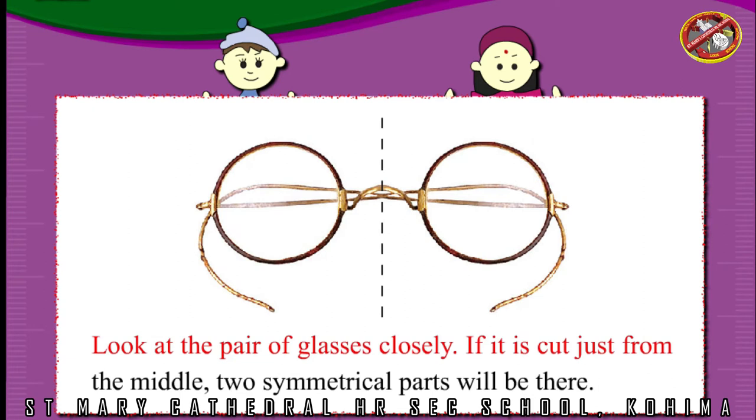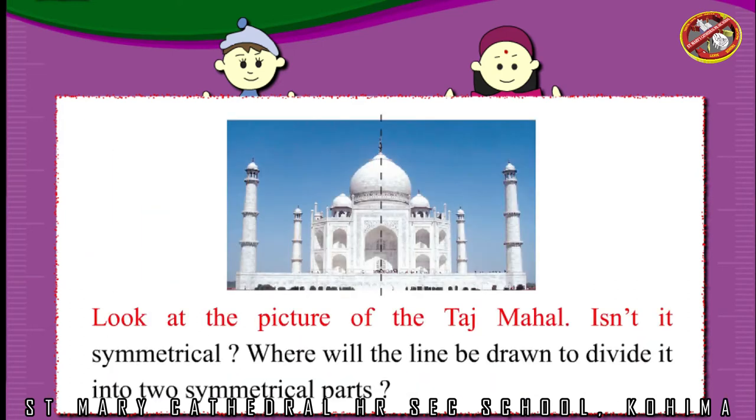Look at the pair of glasses closely. If it is cut just from the middle, two symmetrical parts will be there. Look at the picture of the Taj Mahal. Isn't it symmetrical? Where will the line be drawn to divide it into two symmetrical parts?